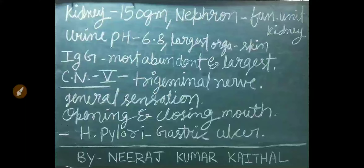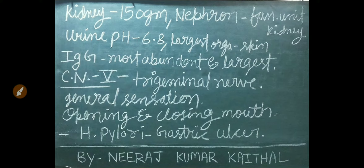Normal weight of kidney is 150 grams. Nephron is the functional unit of kidney. Normal urine pH is 6.8. Largest organ of the body is skin.